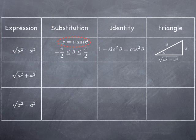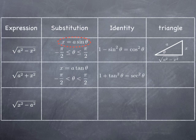Looking at the second row in the table, this time we are going to use the substitution x equals a times tangent of theta. Again we restrict ourselves to an interval that makes tangent one-to-one; the typical choice is the open interval negative pi over 2 to pi over 2. This is also the interval for which arctangent is defined as the inverse function of the restriction of the tangent function to that interval. The identity we are going to use now is that 1 plus tangent squared theta equals secant squared theta.